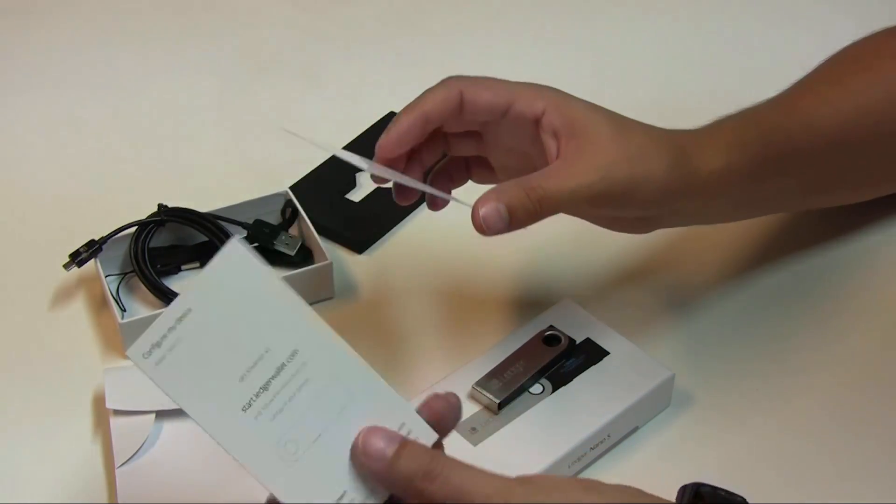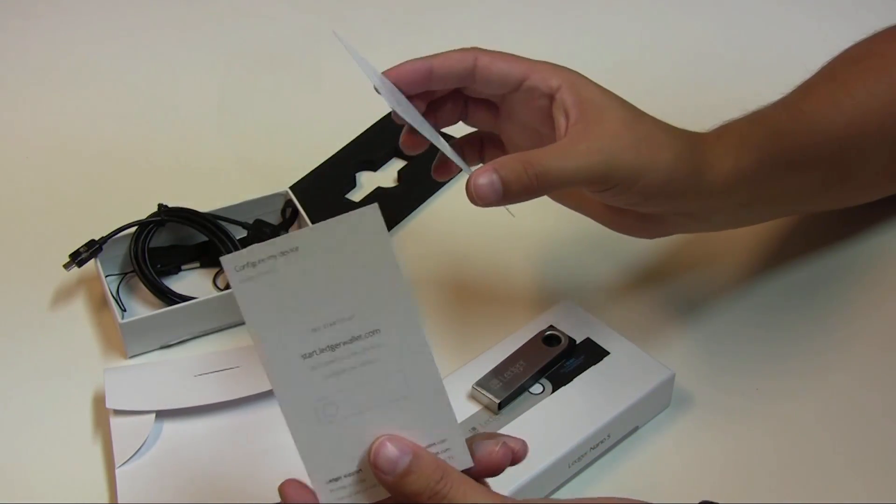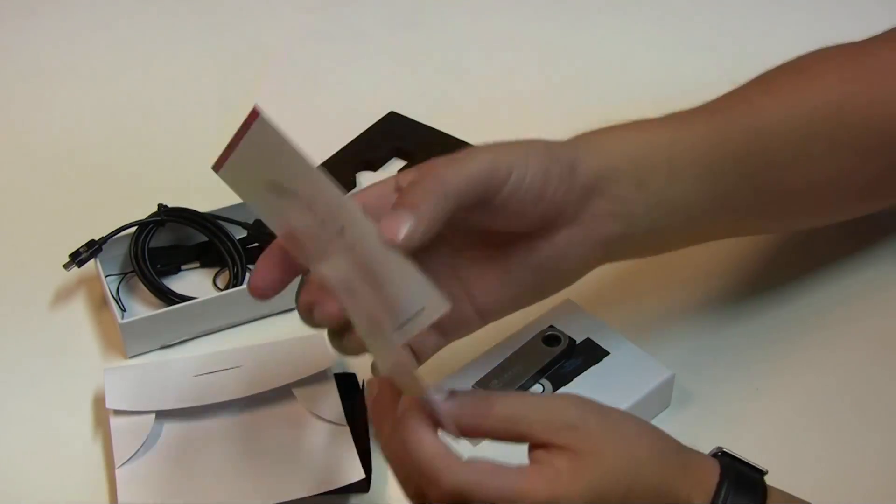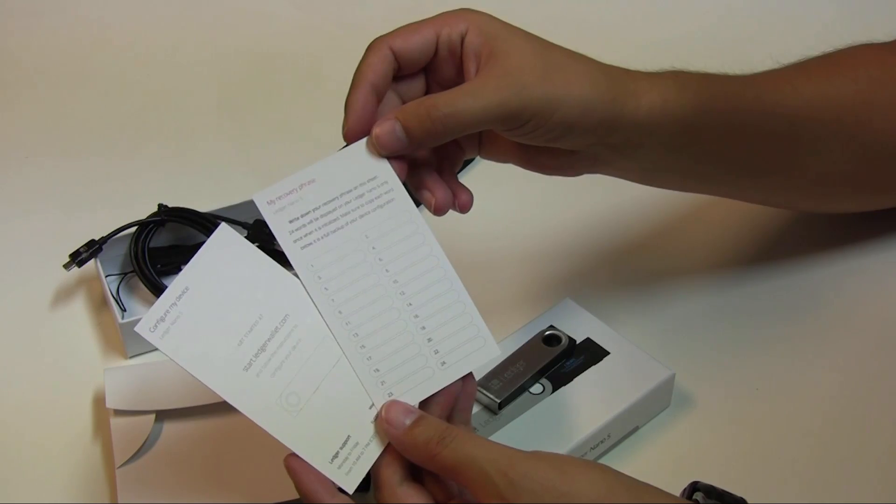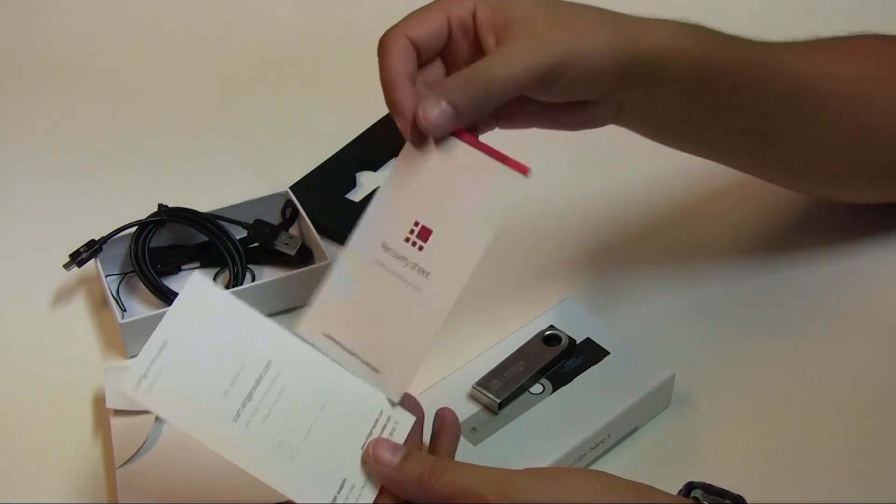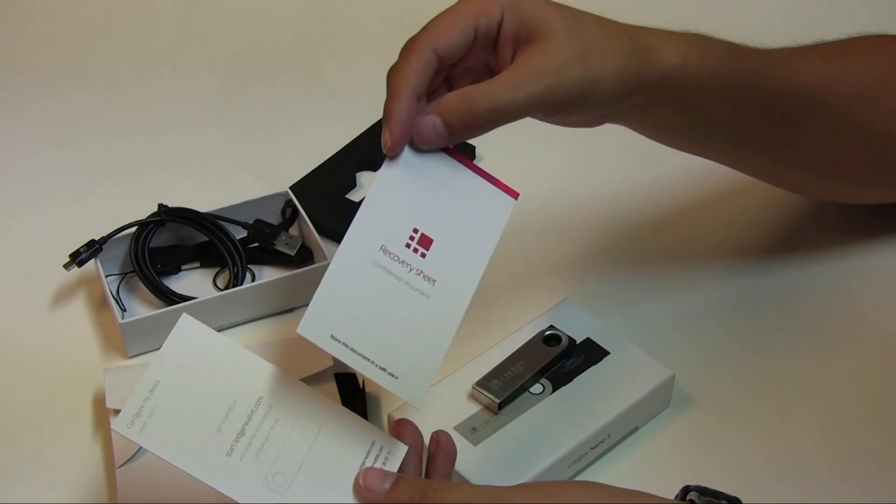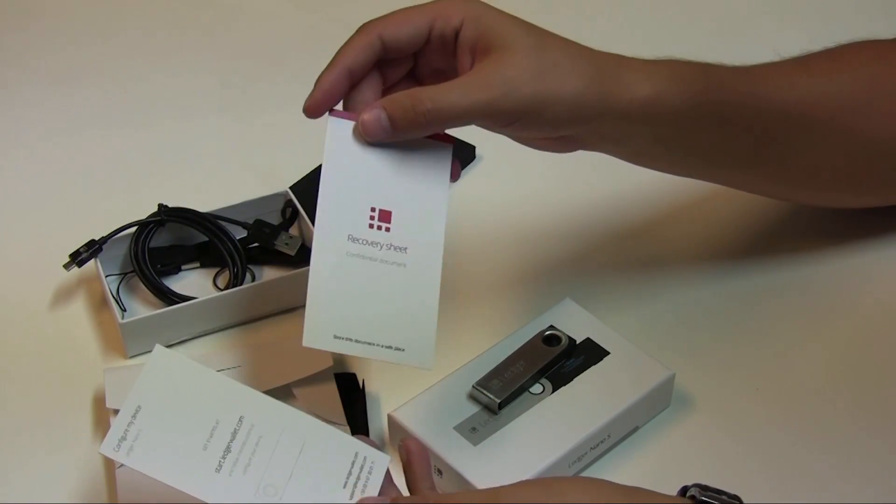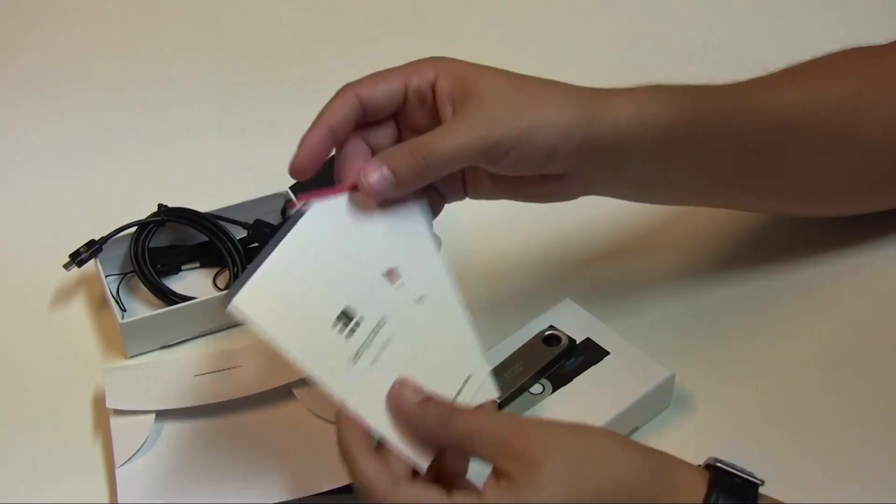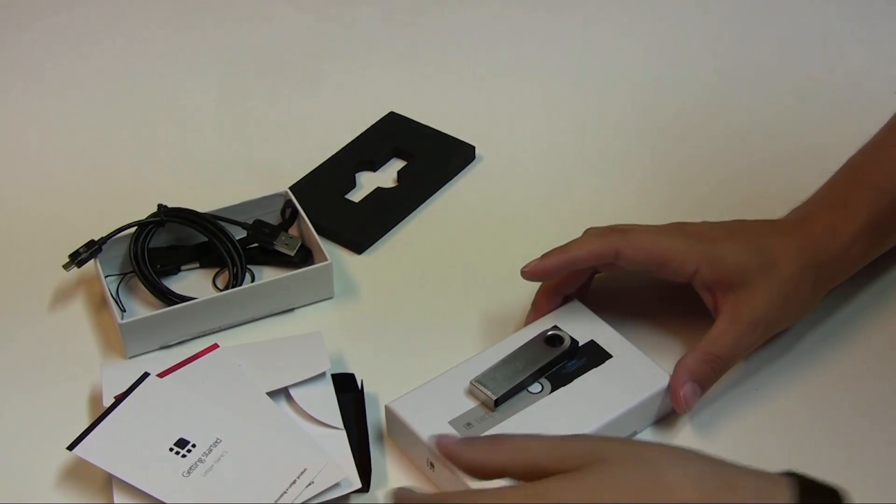So the getting started, it just basically says, go to this web address. And then on the actual recovery sheet, it's got, this is where you put down your recovery phrase. So you can write down the actual words and then obviously keep this in a safe location. Obviously somewhere safe and secure and that will be used for recovery of the actual hardware wallet. So that's it for everything that's in the actual box there.